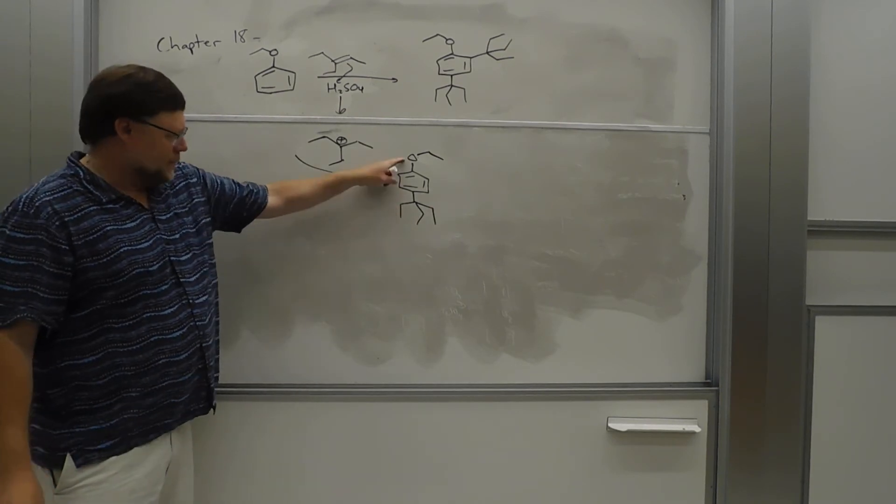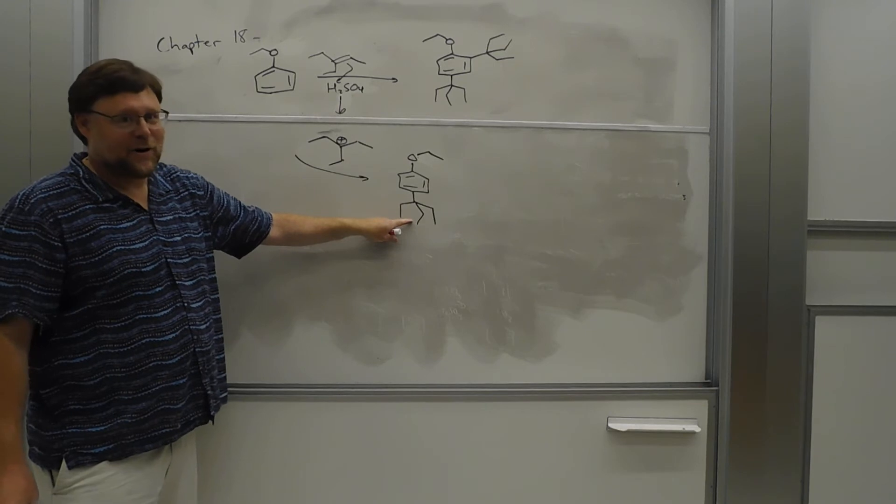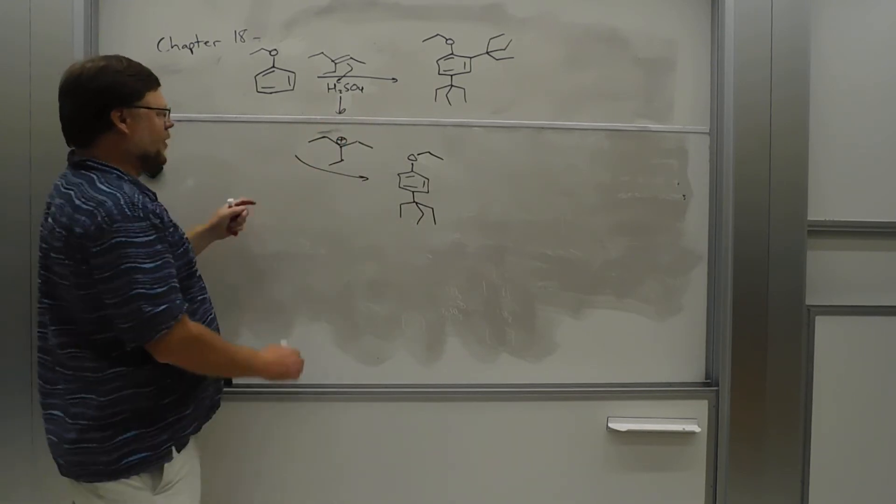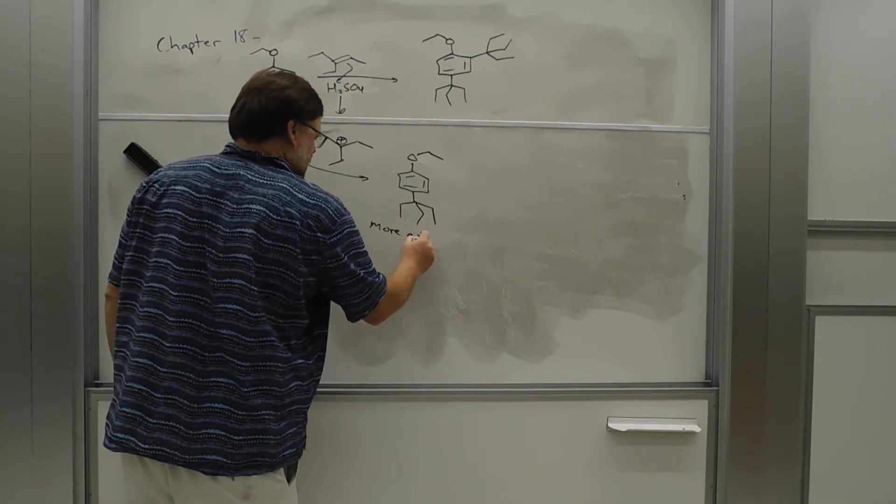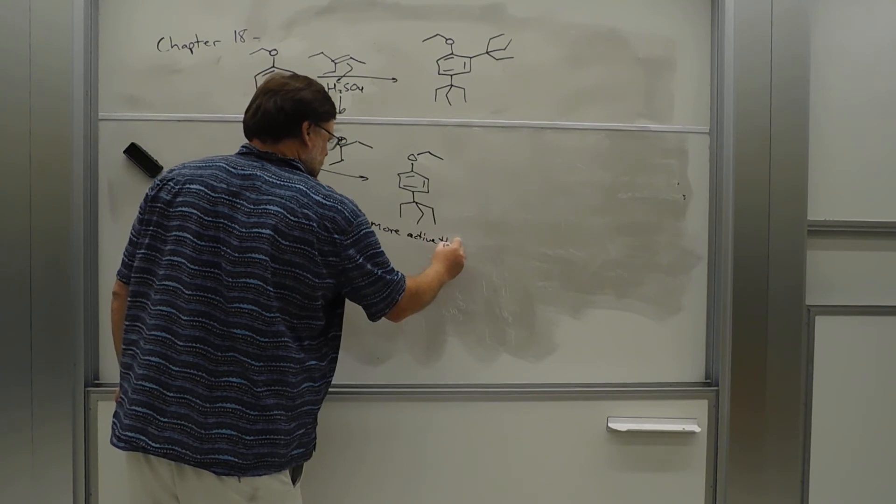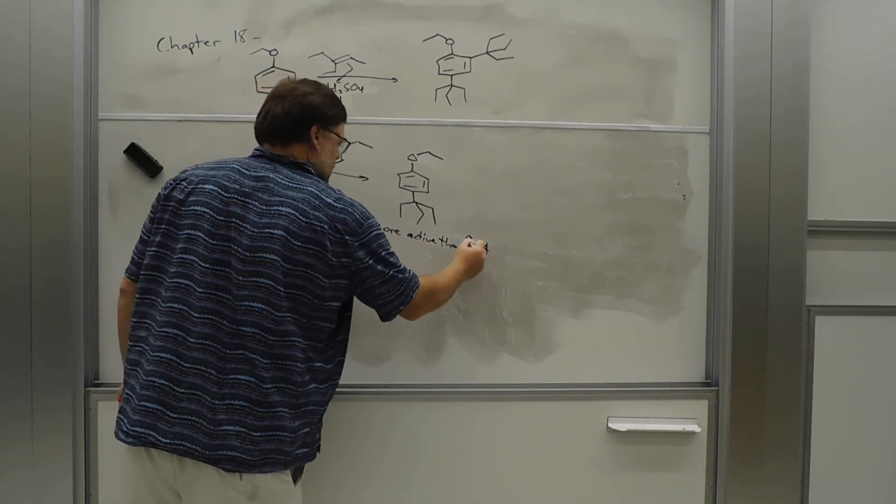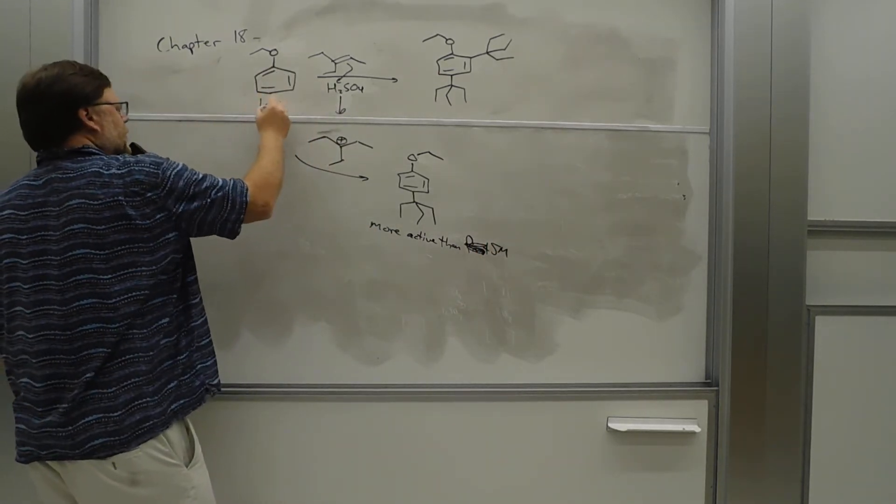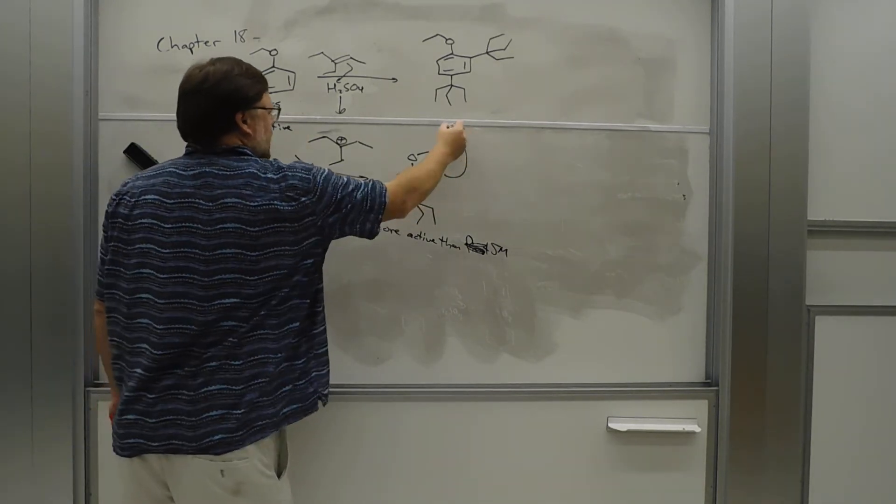And now, ethoxy is a strong donor. This is an alkyl group. It's still a strong donor. So this ring is actually more active than the first ring. Right, we've added an activating group. More active. So, less active, more active. And so then it's going to add twice.